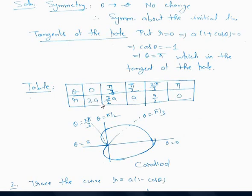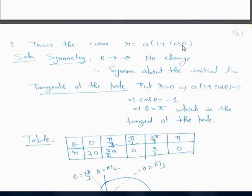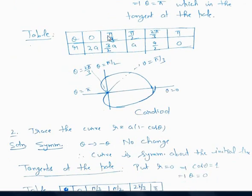When theta is 0, R is 2A (since cos 0 = 1, so 1+1 = 2). When theta is pi/3, R is 3A/2. When theta is pi/2, R is A. When theta is 2pi/3, R is A/2. When theta is pi, R is 0. We join these points to get the upper portion of the curve. By symmetry about the initial line, the mirror image is formed below OA. This curve is known as the Cardioid.